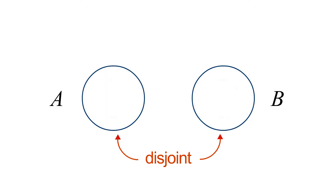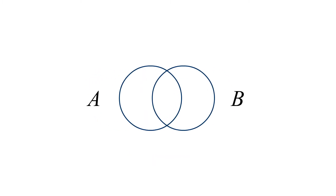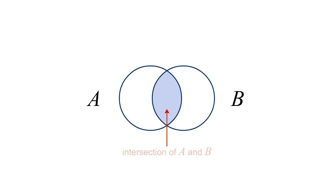If the two circles overlap, this indicates that there are one or more elements common to both sets. The intersecting area represents elements that are members of both A and B. This collection of common elements is called the intersection of sets A and B.